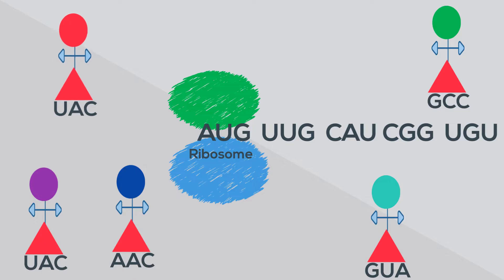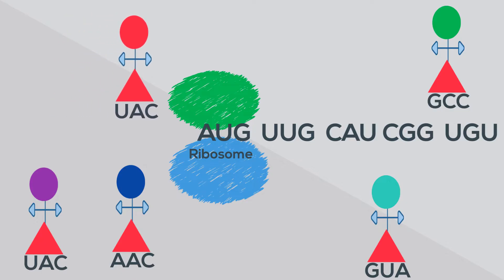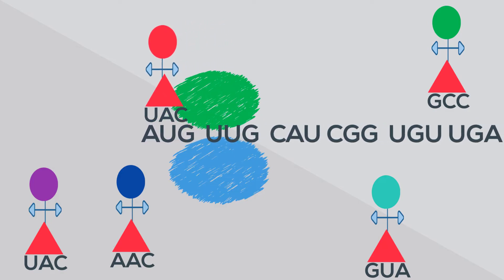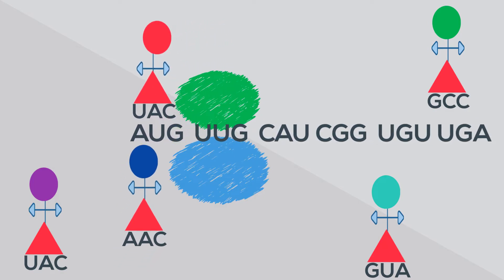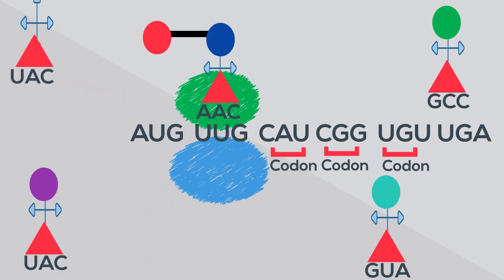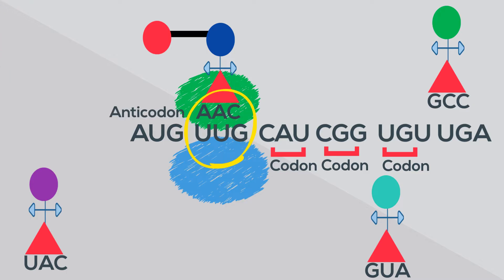At the ribosome, the messenger RNA is read three units at a time. This triplet is called a codon. A transfer RNA has an anticodon, which matches with the codon and has an amino acid attached.